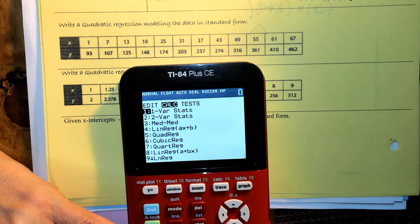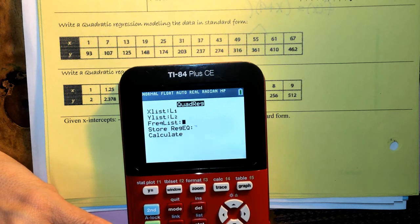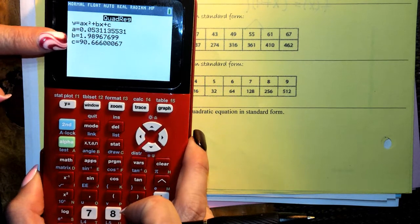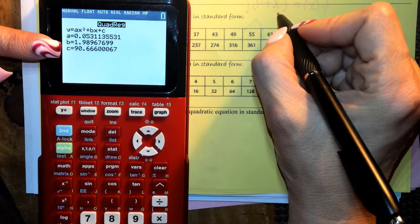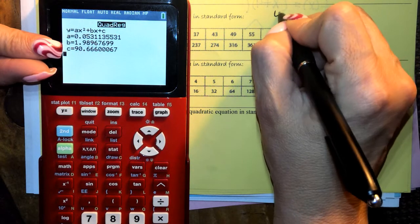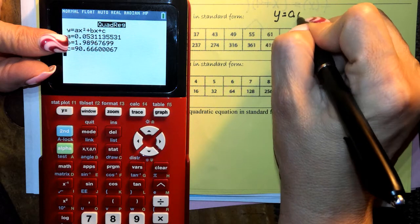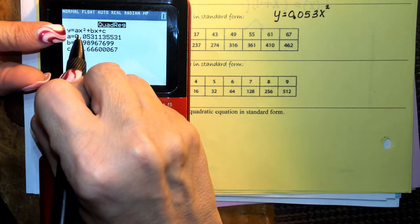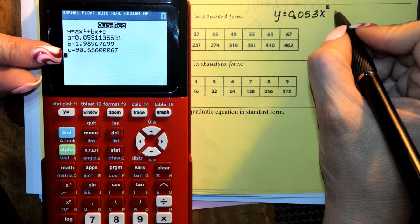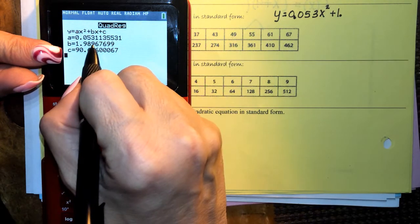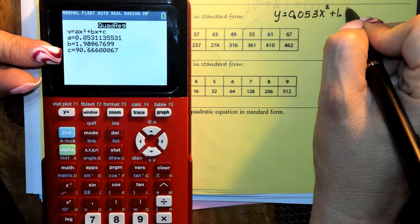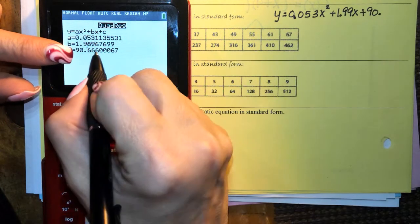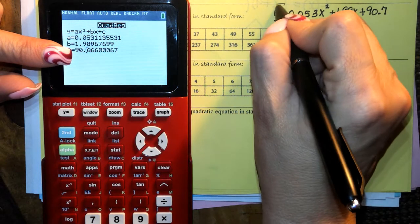You're going to go to stat, calculate, quadratic regression, which is number five, enter all the way through, and here it is. Write the quadratic regression modeling the data in standard form. It gives it to me in standard form. We're going to do three significant figures, meaning we're going to take the first three numbers. So we're going to say y equals 0.053, and that will be x squared. Remember, so this 9 is going to round that 8 to a 9, 1.99x, and then plus 90.